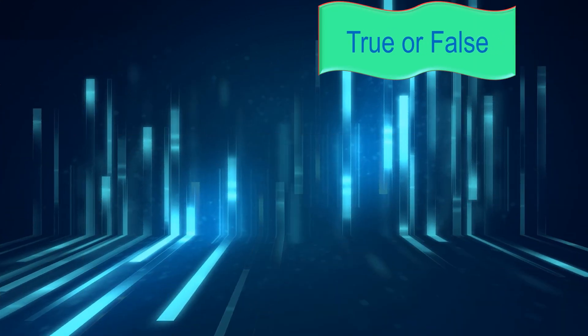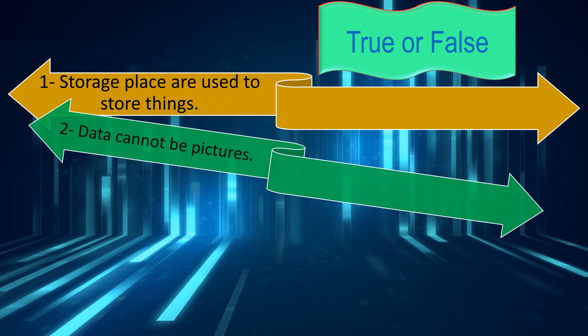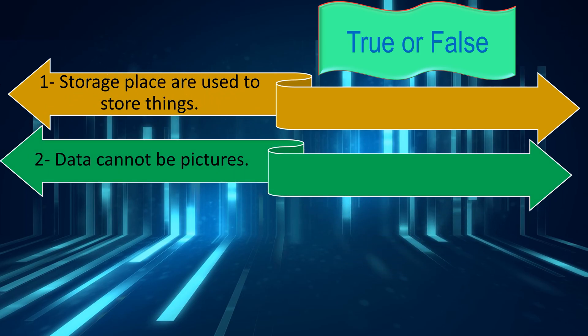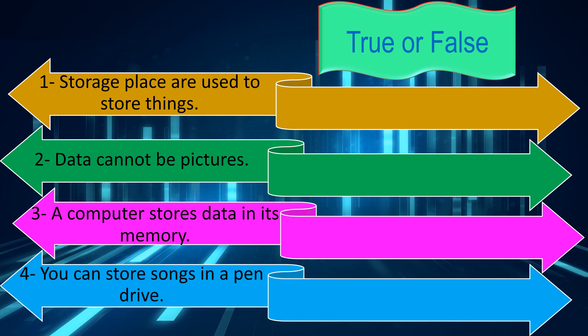True or false. Number 1: Storage places are used to store things. Number 2: Data cannot be pictures. Number 3: A computer stores data in its memory. Number 4: You can store songs in a pen drive.